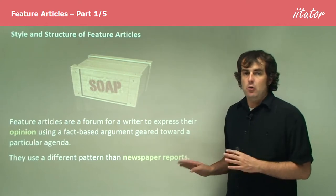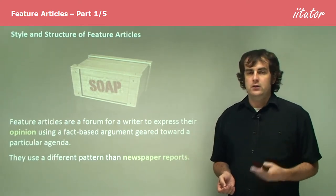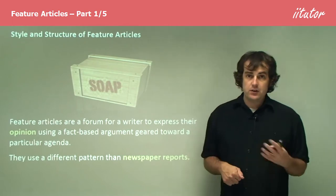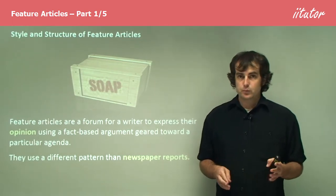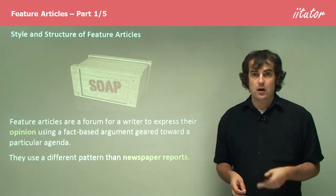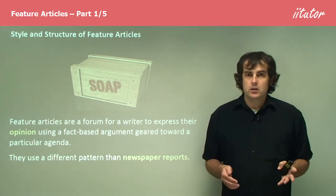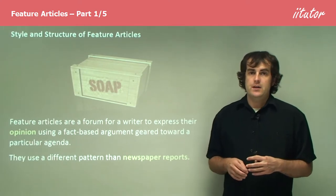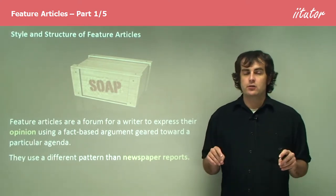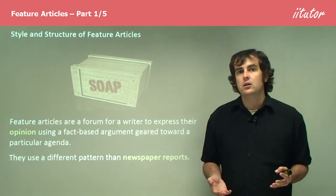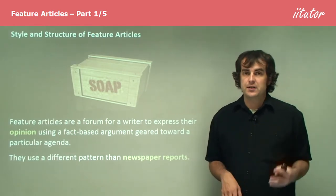Newspaper reports are intended to be unbiased — they are just a form of reporting the news. Whereas with a feature article, if you look at one in a newspaper or online, you'll often see not only the article itself, but also a large picture of the journalist or the person who wrote it. The writer is almost as much a part of the article as the article itself.